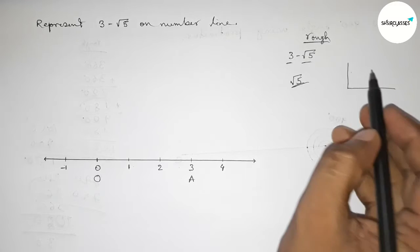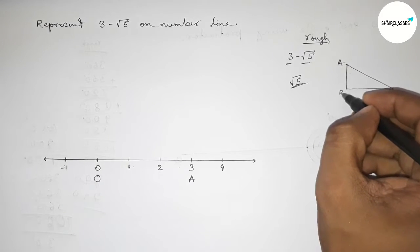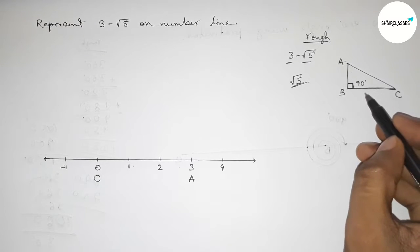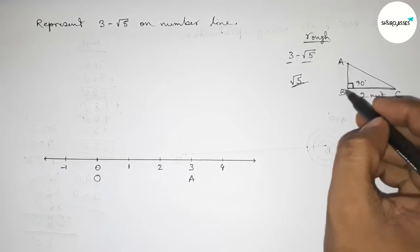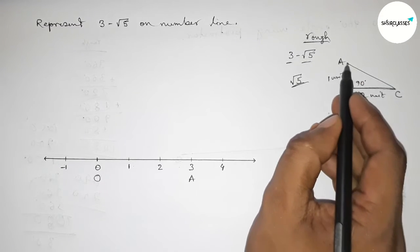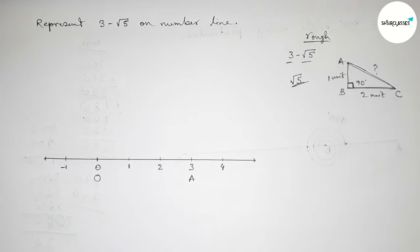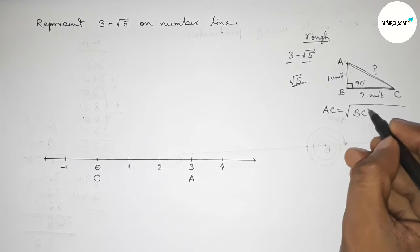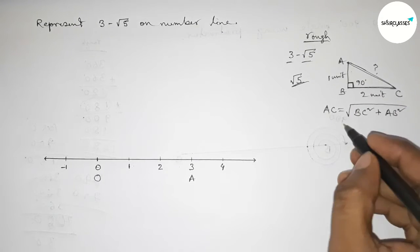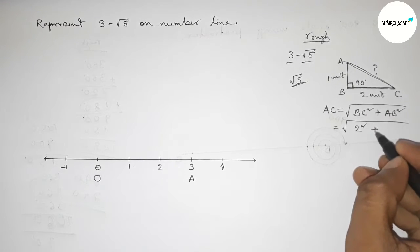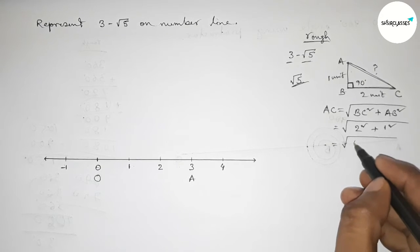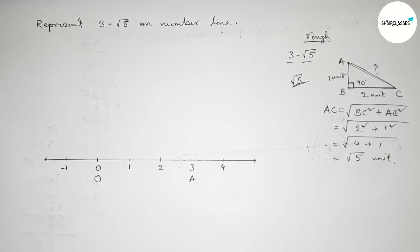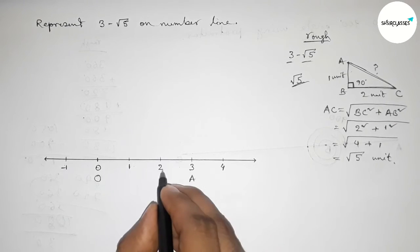Roughly drawing a right angle triangle ABC with a 90 degree angle. Taking the base equal to 2 units and the perpendicular equal to 1 unit. By Pythagoras theorem, hypotenuse AC equals root of base squared plus perpendicular squared, which is root of 2 squared plus 1 squared, giving root of 4 plus 1, which equals root 5 units.